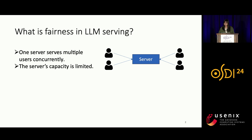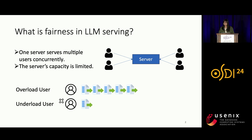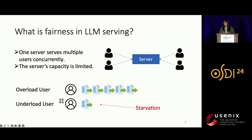Assume the service capacity is limited, meaning it cannot serve an infinite number of requests. Now consider there is an overloaded user sending requests at a very high frequency, and an underloaded user sending requests at a very low frequency. If the server does not distinguish identities and only randomly chooses requests to process, whoever sends more requests will be served more. So the underloaded user can get starvation, but since it only sends a few requests, it should not be delayed. This is undesired.